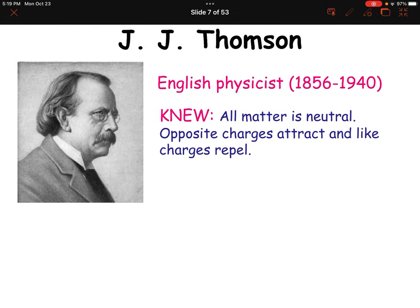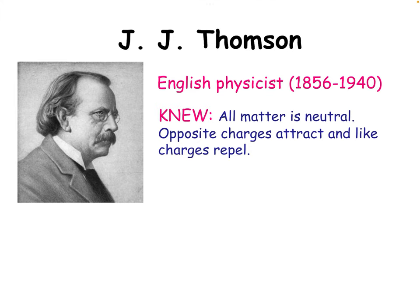This guy is a little bit more important in the history of the atom. His name is J.J. Thomson. He used a Crookes tube for his experimentation, getting even more modern now. Going into his experimentation: J.J. Thomson knew that matter is neutral, meaning no charge — meaning positive charges would be equivalent to any amount of negative charges. He also knew, like we do with magnets, that opposite charges attract and like charges repel or push away from each other. He already had that information as he was doing his experiments.